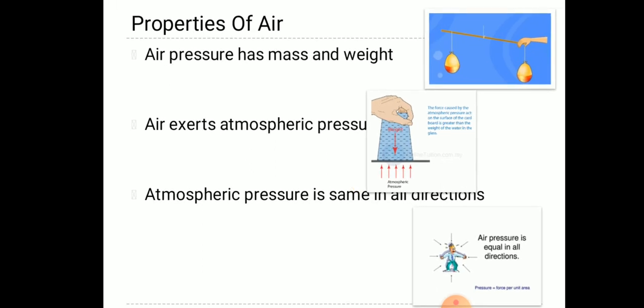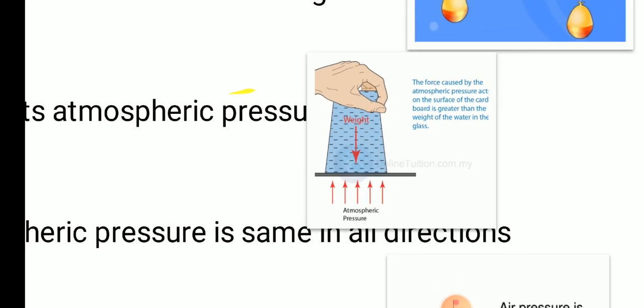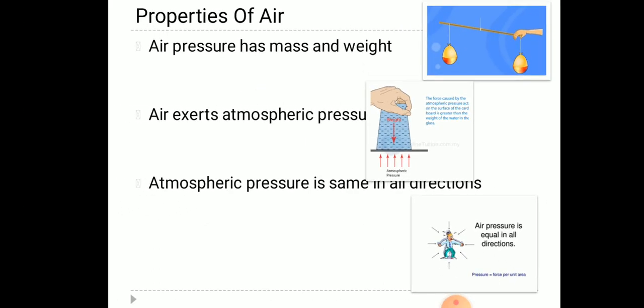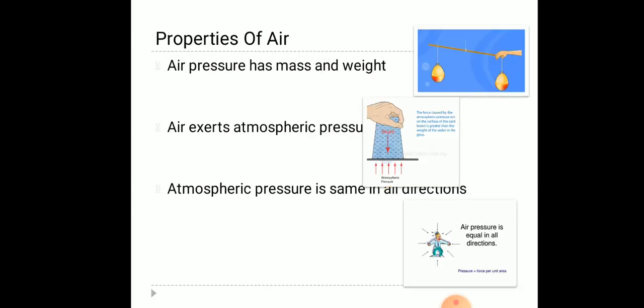In this slide you can see that air has mass and weight. The balloon experiment is done here. You can also see that air exerts atmospheric pressure. It is a simple glass experiment in which you can see that the force caused by the atmospheric pressure acts on the surface of the cardboard is greater than the weight of the water in the glass. This simple experiment you will do at home. In the third picture you can see that atmospheric pressure is the same in all directions. Air pressure is equal in all directions: top, bottom, right, left, everywhere.